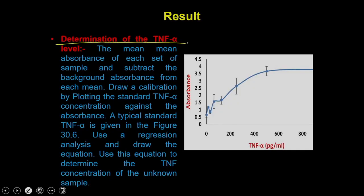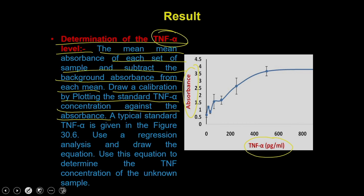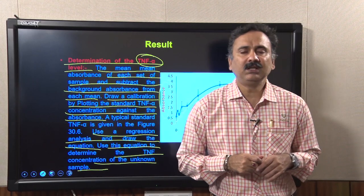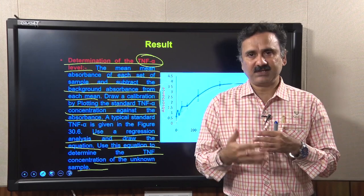Aspirate the detector solution, wash, then incubate with the substrate solution. After some time, the reaction can be read with a spectrophotometer. To determine TNF-alpha levels, calculate the mean absorbance of each sample, subtract background absorbance, then draw a calibration curve by plotting standard TNF-alpha concentration on the x-axis against absorbance on the y-axis. Use regression analysis to determine the TNF-alpha concentration in unknown samples.